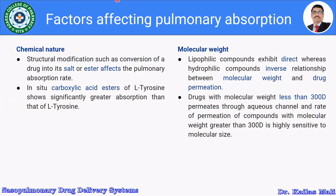Let us see how chemical nature affects pulmonary absorption. Structural modification such as the conversion of a drug into its salt or ester affects the pulmonary absorption rate. For example, cytocarboxyl esters of L-tyrosine show significantly greater absorption than L-tyrosine itself, indicating that the ester or salt form can improve the absorption of a drug from the pulmonary route.